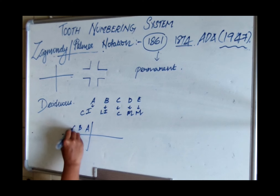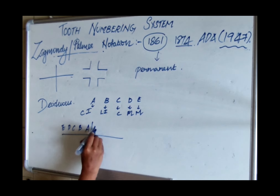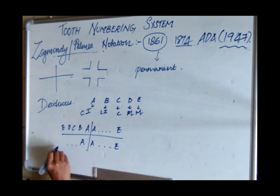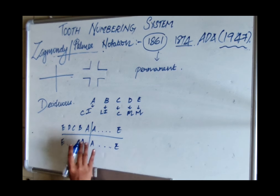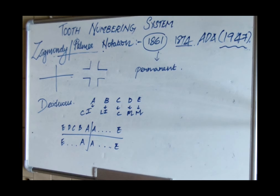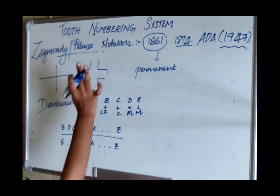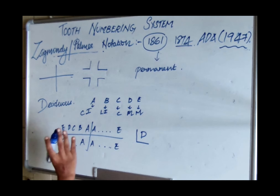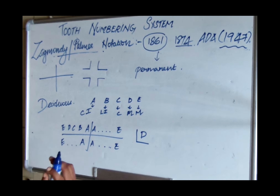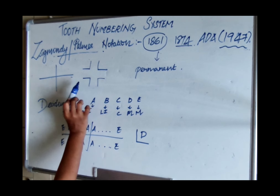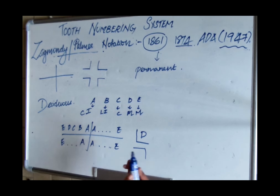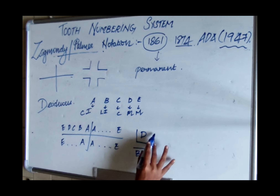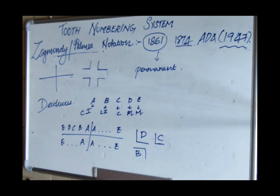Letters A to E are assigned for each of the four quadrants combined with their respective quadrant symbols. For example: maxillary left first molar — use the maxillary left symbol with letter D. Mandibular right lateral incisor — use the mandibular right symbol with letter B. Maxillary left canine — use the maxillary left symbol with letter C.